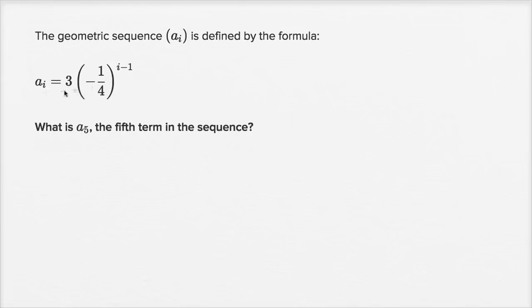All right, well we can just use this formula. A sub five is going to be, everywhere I see an i I replace it with a five, equal to three times negative one-fourth to the five minus one power.